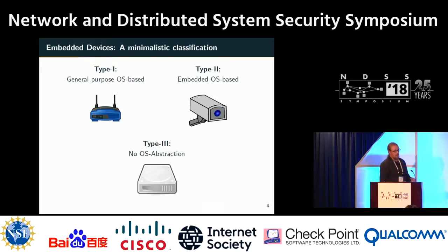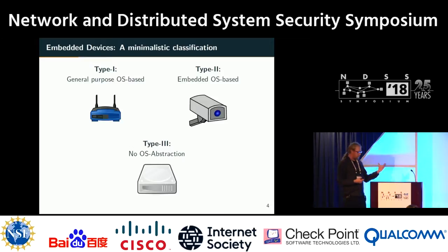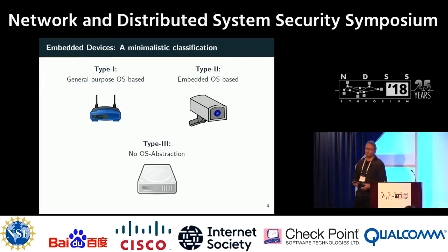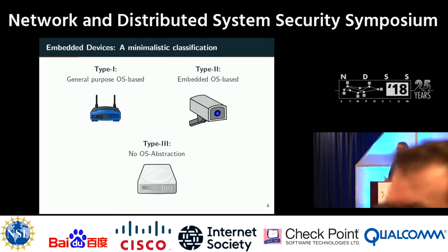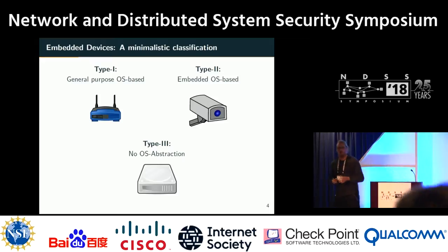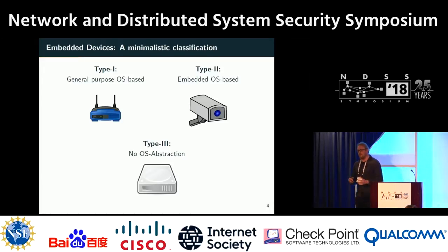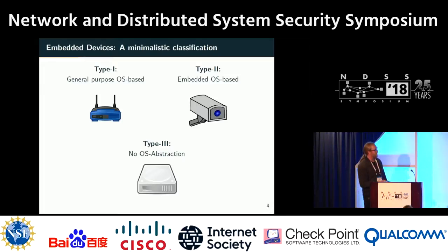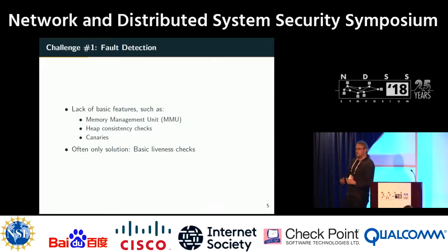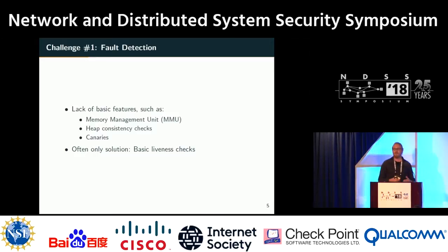As Type 2 devices, we denote devices with an operating system custom-tailored to embedded needs — for instance, to handle scenarios with no memory management unit — found on single-purpose electronics such as IP cameras or DVD players. As Type 3 devices, we define more monolithic devices with no usable operating system abstractions; there may be a hardware abstraction layer, but the resulting firmware is essentially one huge binary blob.